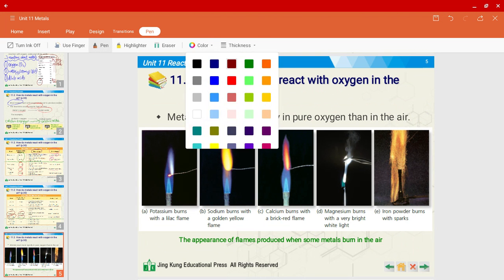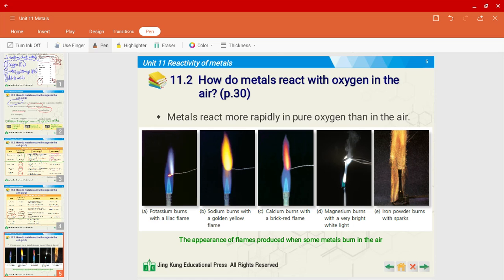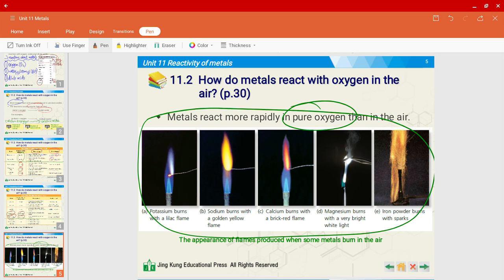Metals react more rapidly in pure oxygen than in air. That makes a lot of sense because in air you have different substances like nitrogen, carbon dioxide. But in pure oxygen, obviously you only have oxygen, right? So it's pretty easy to react in pure oxygen. So I won't go through the flame colors again. I'm sure all of you should be very familiar by now. But diagram E is a new one. So iron powder burns with sparks. Pretty cool, huh? You see the sparks over here.